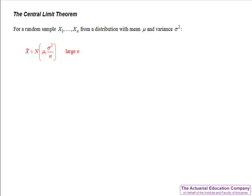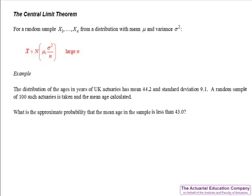We can use this result to calculate probabilities involving sample means from a distribution. Suppose the distribution of ages in years of UK actuaries has a mean of 44.2 and a standard deviation of 9.1, and a random sample of 100 such actuaries is taken and the mean age is calculated. What is the approximate probability that the mean age in the sample is less than 43?